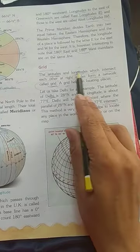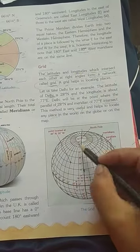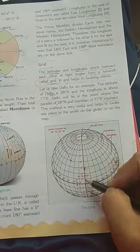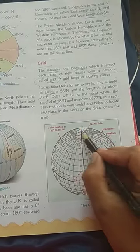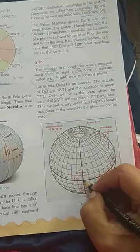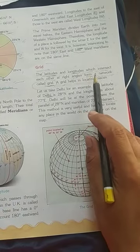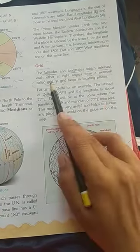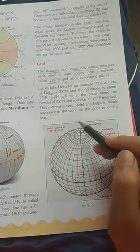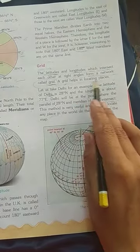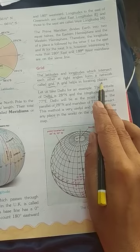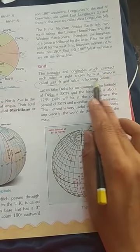The latitudes and longitudes intersect with each other, forming a network called grid. The grid helps in locating places.